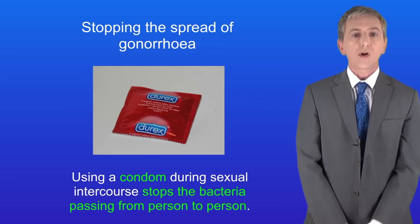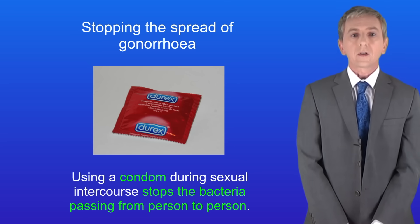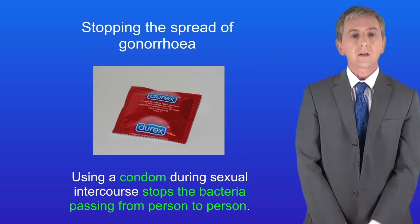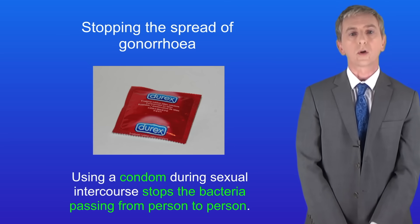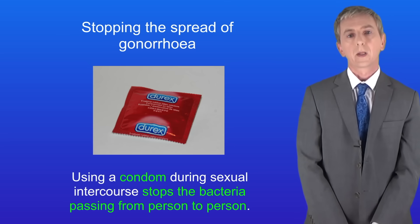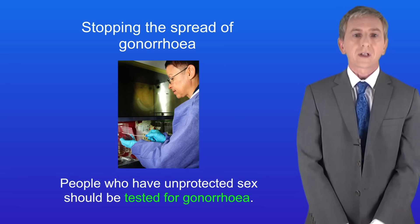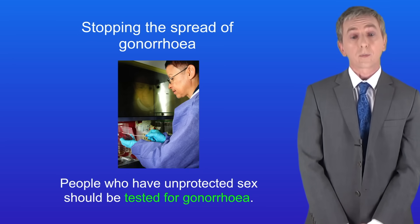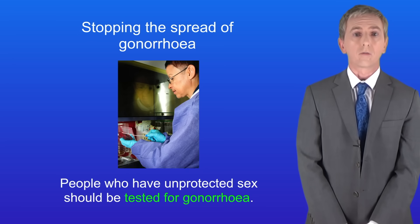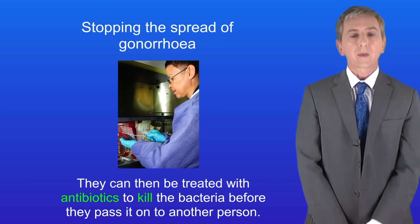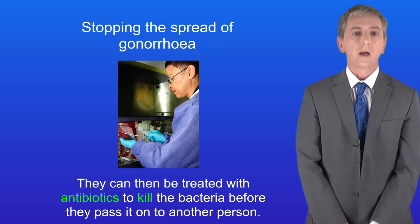We can stop the spread of gonorrhea in two main ways. Firstly, using a condom during sexual intercourse stops the bacteria passing from person to person. Secondly, people who have unprotected sex should be tested for gonorrhea, and can then be treated with antibiotics to kill the bacteria before passing it on to another person.